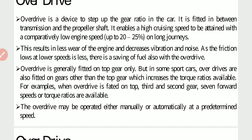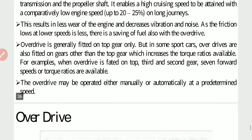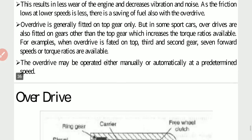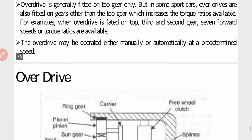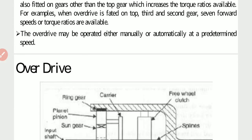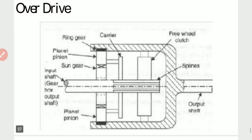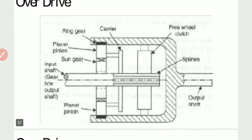For example, when overdrive is fitted on top, 3rd, and 2nd gear, seven forward speeds or torque ratios are available. The overdrive may be operated either manually or automatically at a predetermined speed. This is the diagram of overdrive.